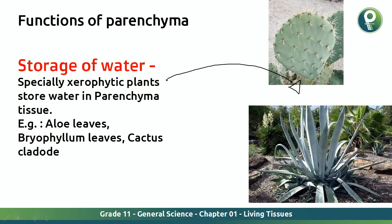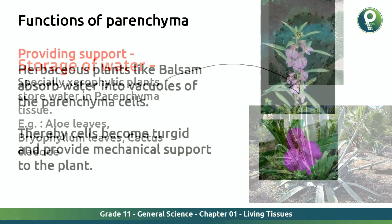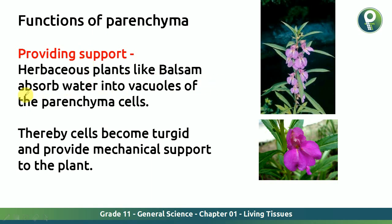A question may ask which are the xerophytic plants — aloe leaves, bryophyllum leaves, and cactus cladodes store water and are xerophytic plants. The fourth function: herbaceous plants like balsam absorb water into the vacuoles of parenchyma cells, whereby cells become turgid and provide mechanical support to the plant. When parenchyma tissue takes in water, it becomes rigid and allows the plant to stand upright.